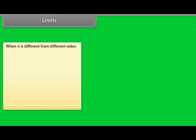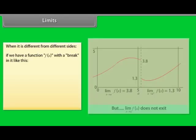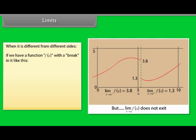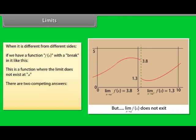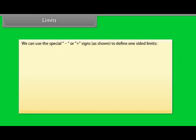What if we have a function f(x) with a break in it? This is a function where the limit does not exist at A — you cannot say what it is because there are two competing answers: 3.8 from the left and 1.3 from the right. But you can use special minus or plus signs to define one-sided limits: the left-hand limit is 3.8, the right-hand limit is 1.3, and the ordinary limit does not exist.